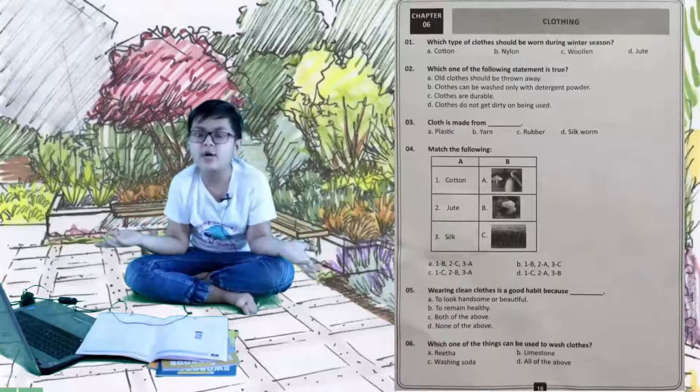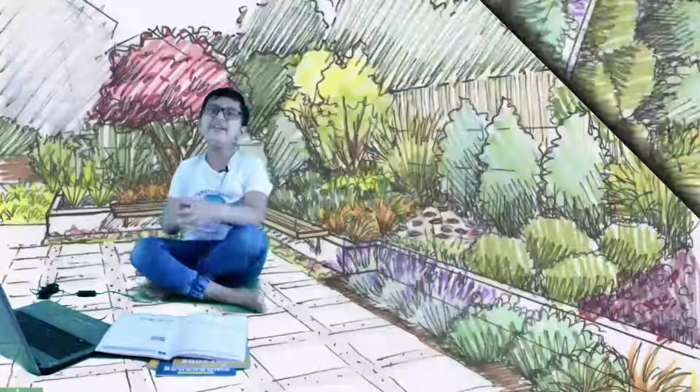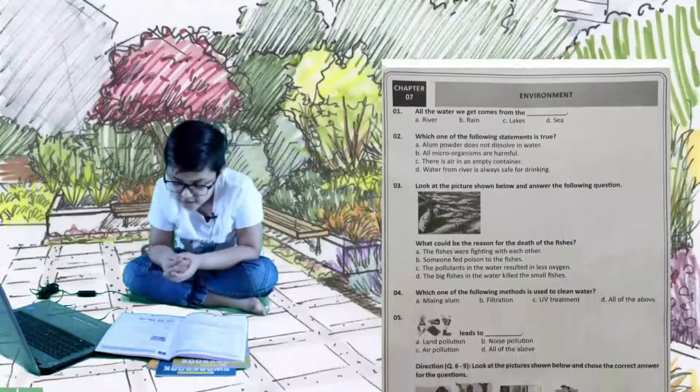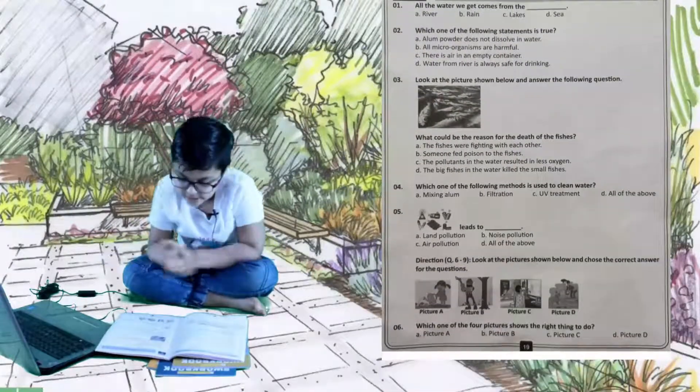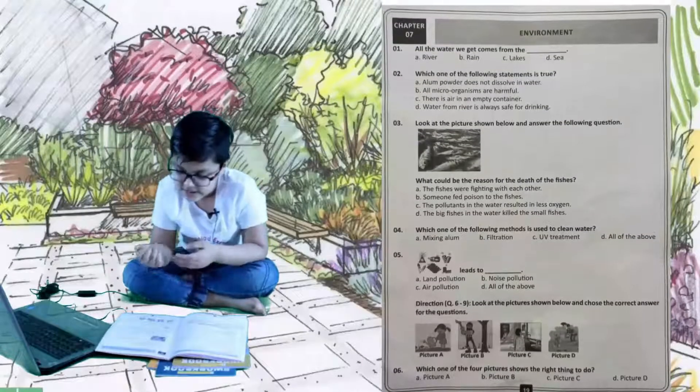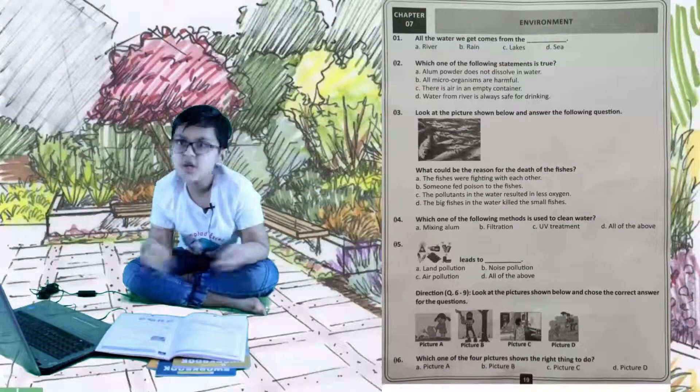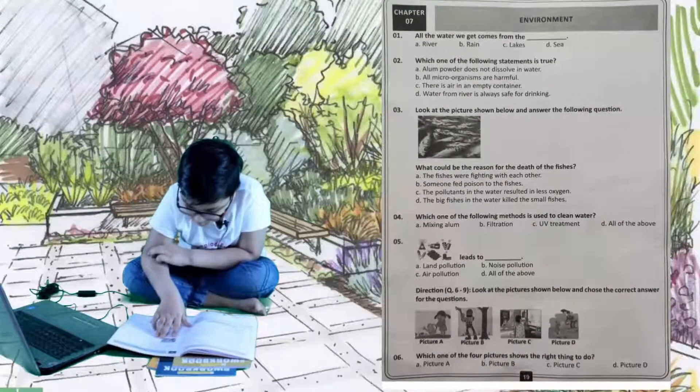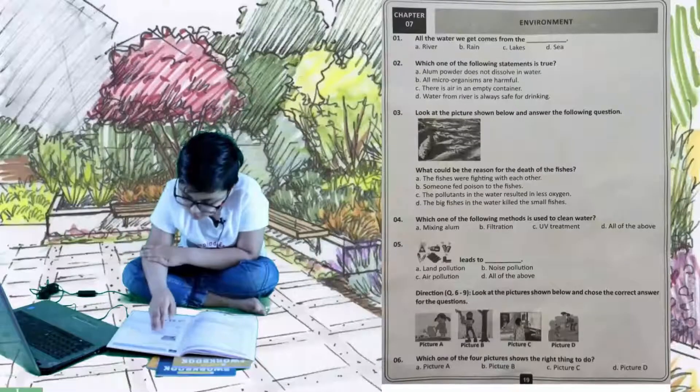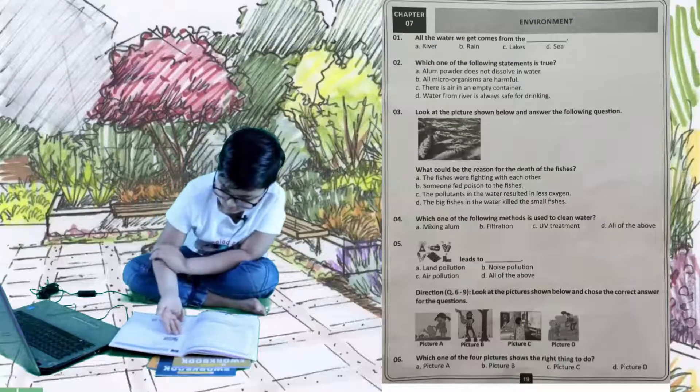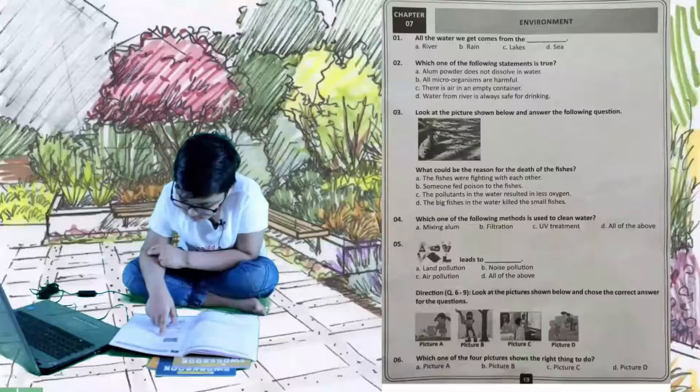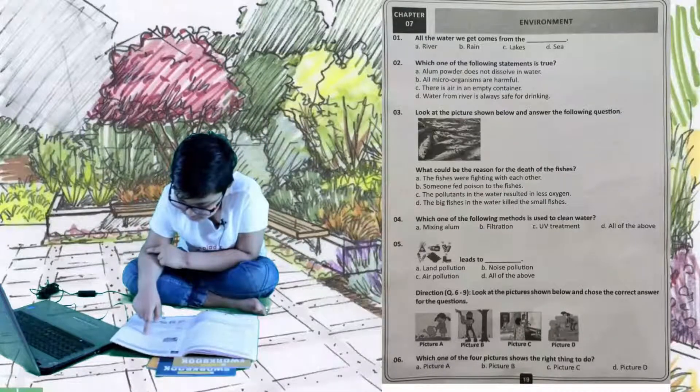Chapter 7 is our environment. Question number one: all the water we get from the dash. A is river, B is rain, C is lakes, and D is sea. Of course it's rain, too easy. Let's do question 3. Look at the picture shown below and answer the following question. There are dead fishes, so what could be the reason for the deaths of these fishes?